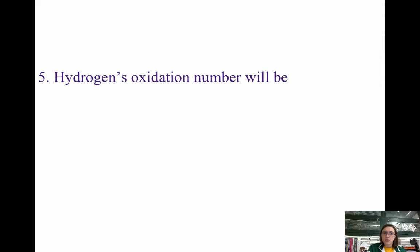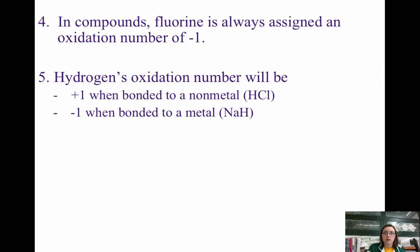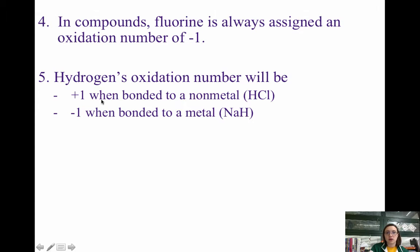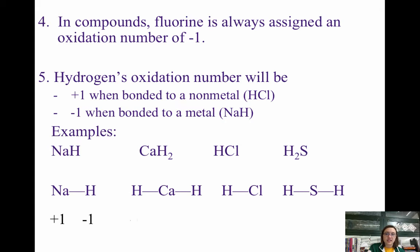The next rule is that hydrogen's oxidation number will be +1 when bonded to a nonmetal, and −1 when bonded to a metal. Hydrogen is normally +1, but when bonded to a metal it forms the hydride ion and is −1. Also, in compounds, fluorine always has an oxidation number of −1 — note that F₂ is zero because it's in its elemental form, but in a compound fluorine is always −1 because it's the most electronegative element.